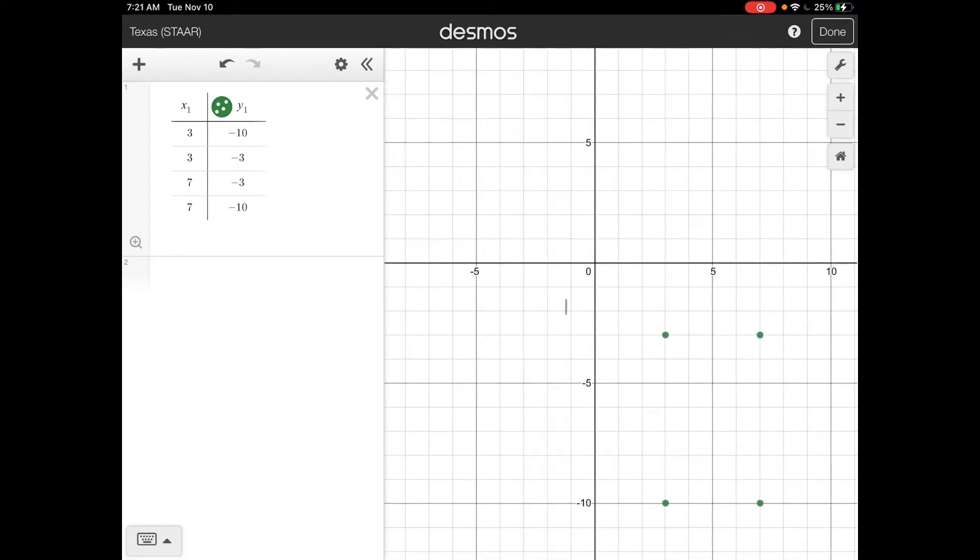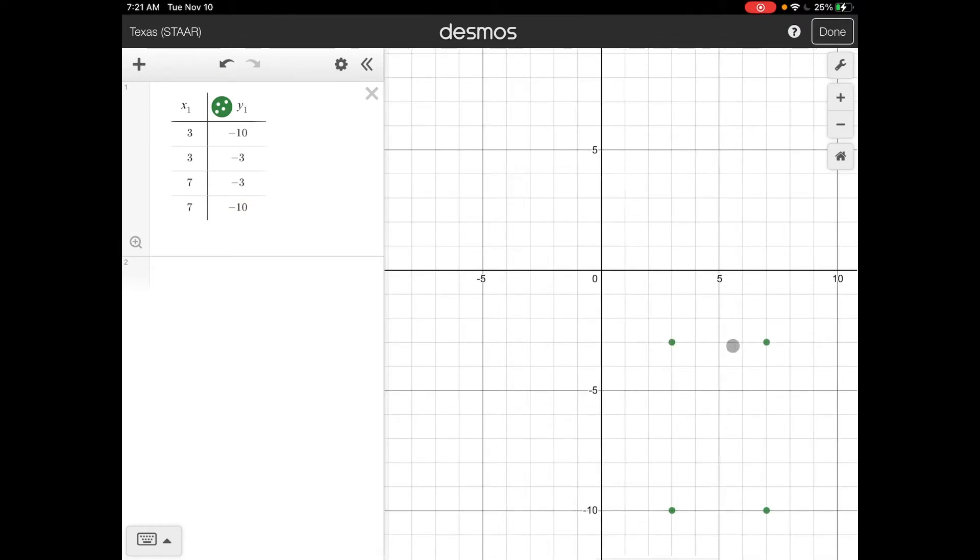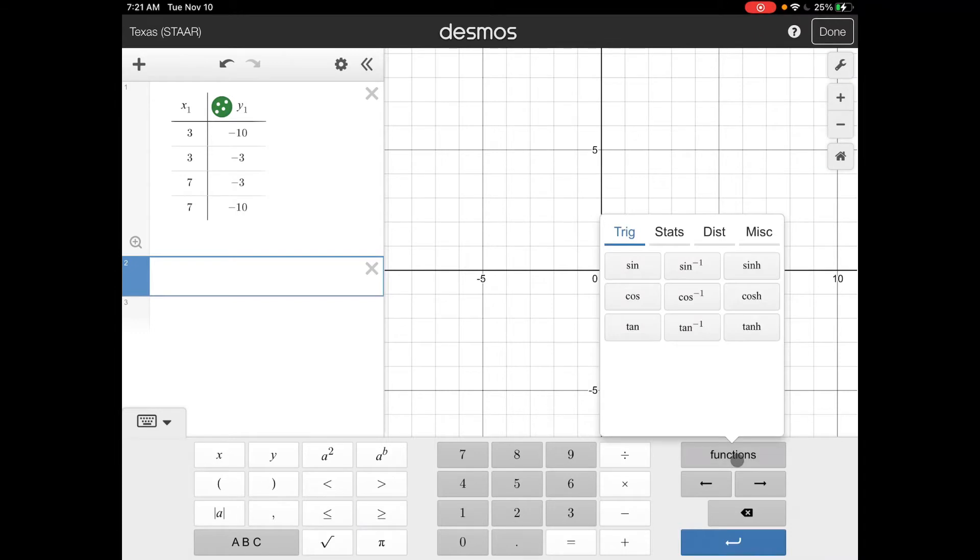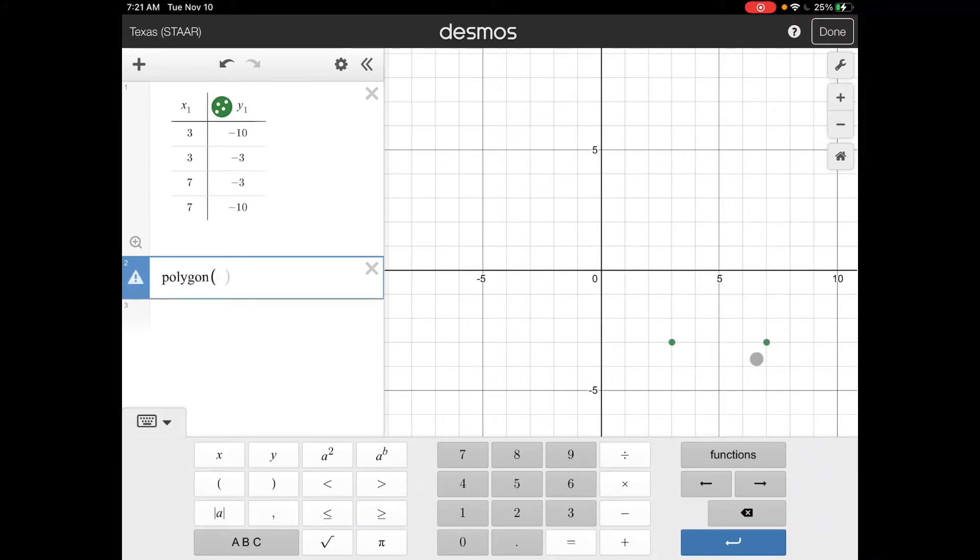So now you can see that I've got my points created here. The second step says to tap functions, so you'll tap functions, then miscellaneous, then polygon. And that third step is to make the polygon using that table, so it's x1 and y1, so that's what I put in my polygon here.